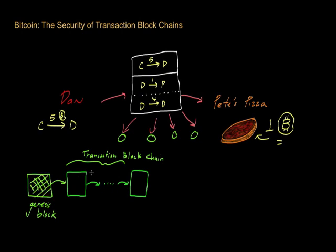Everybody can verify the details of any transaction if they want to, because that information is public. In particular, what these Bitcoin miners will look at is whether or not Dan previously received five Bitcoins from anybody else — in this particular case, it was his cousin Carol.